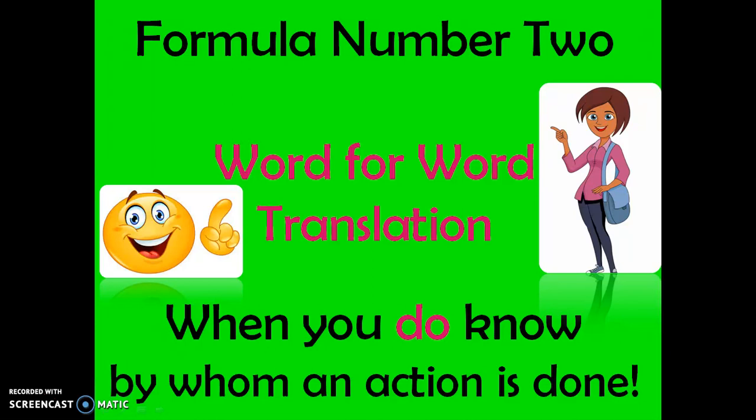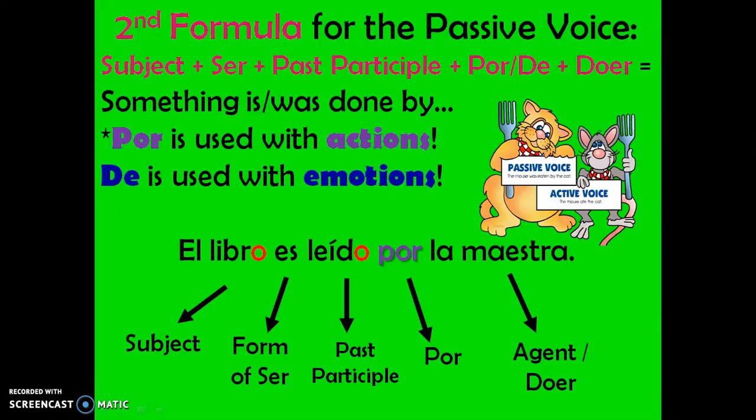So if we say, the doggie is washed by me, the homework is completed by the students, the food is prepared by the chef — those are passive voice examples when we know by whom an action is done. We have a word-for-word translation that we use.